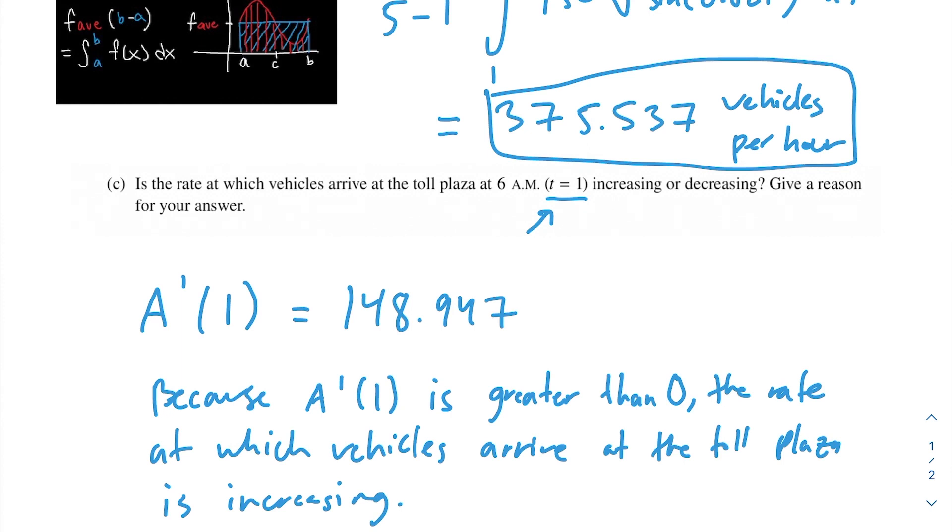Make sure you have all that information inside of your answer. You want to mention that it's A prime of 1, it's greater than 0, and that it's increasing. If you just provide this information, they're not going to give you the full points. Make sure you have that justification as well, that the rate at which the vehicles arrive is increasing.